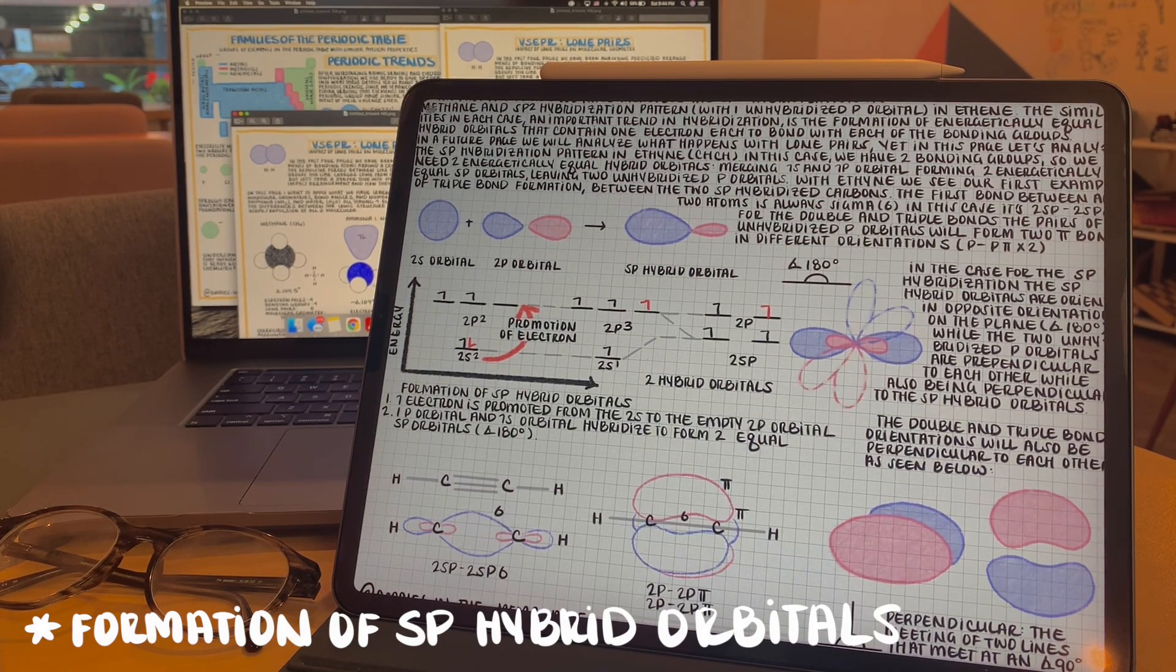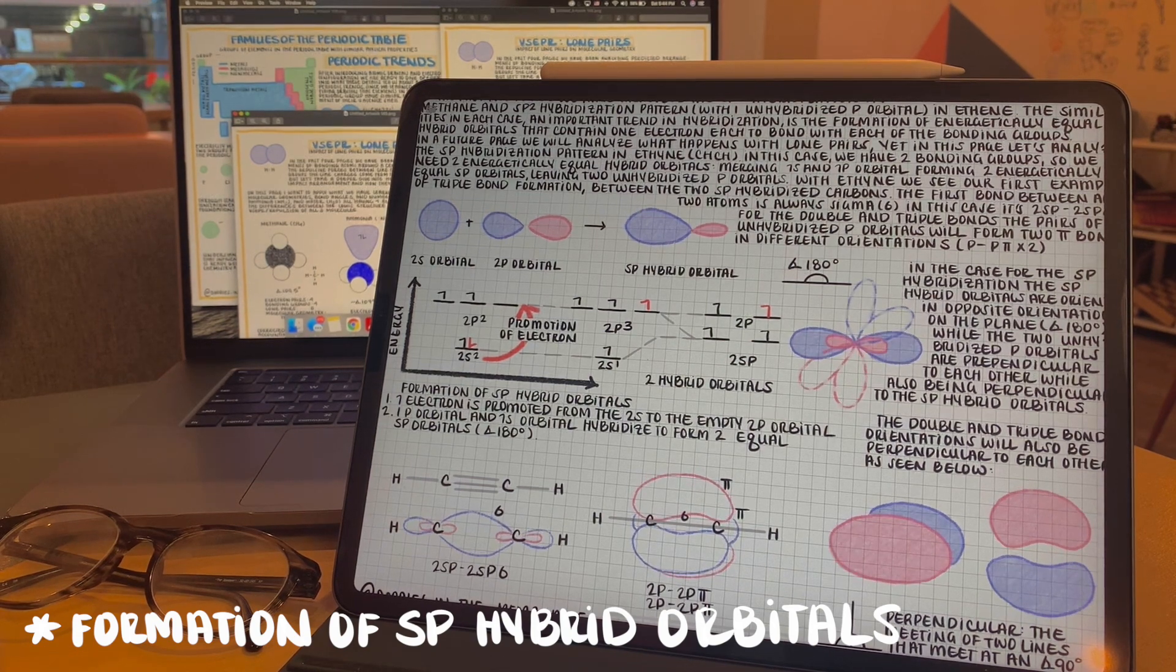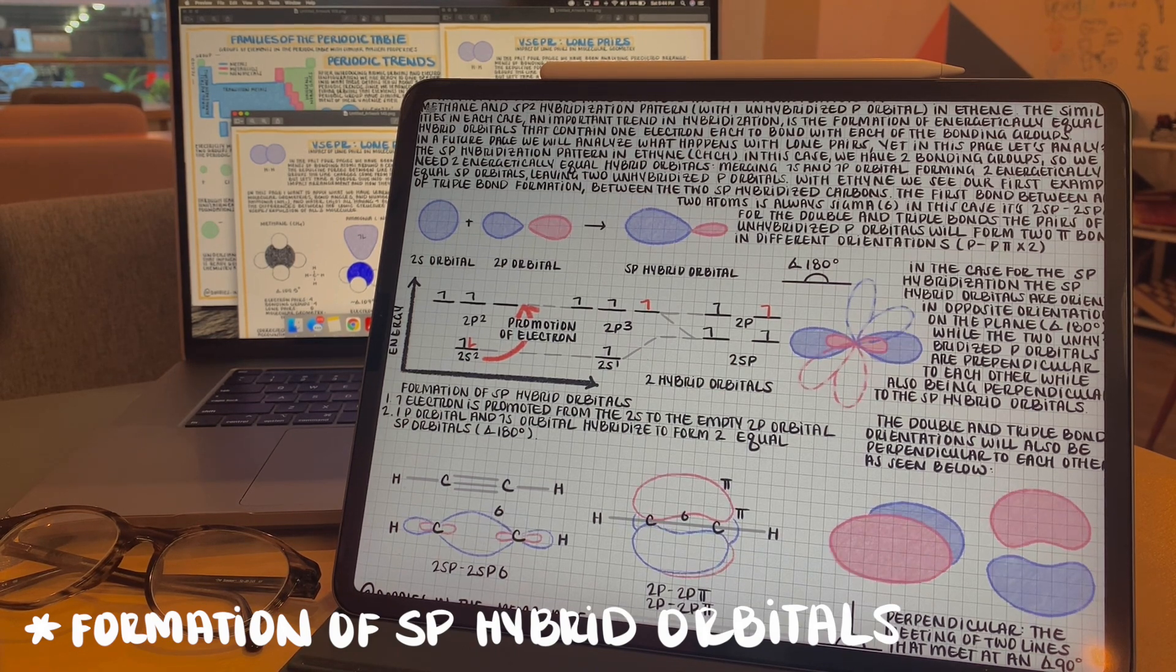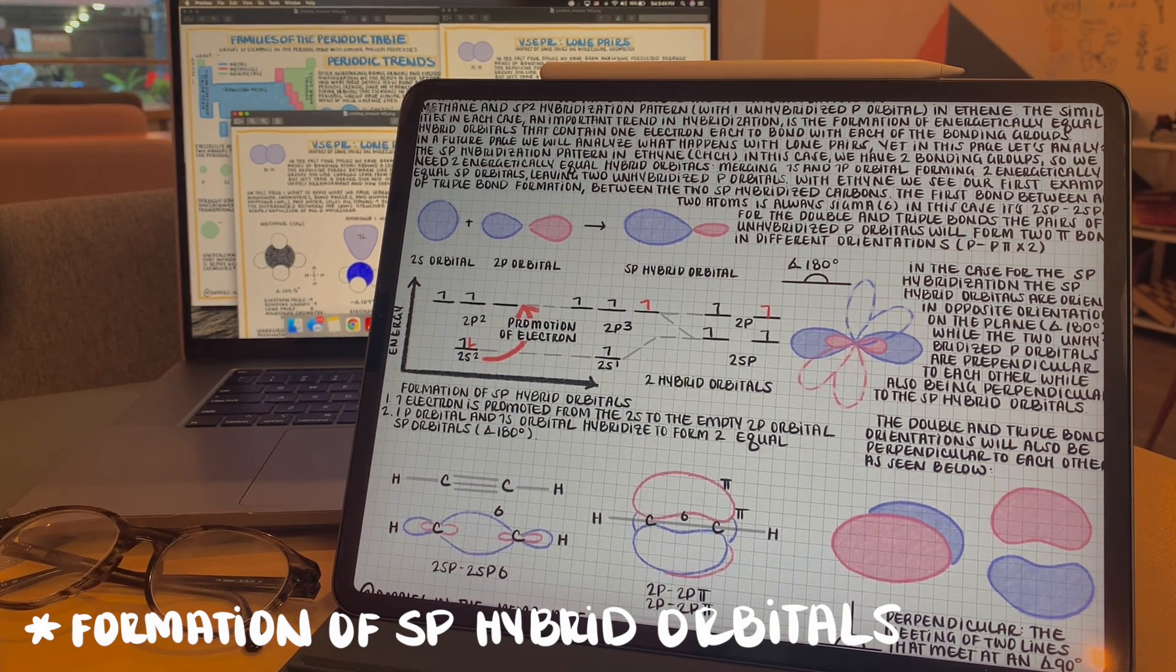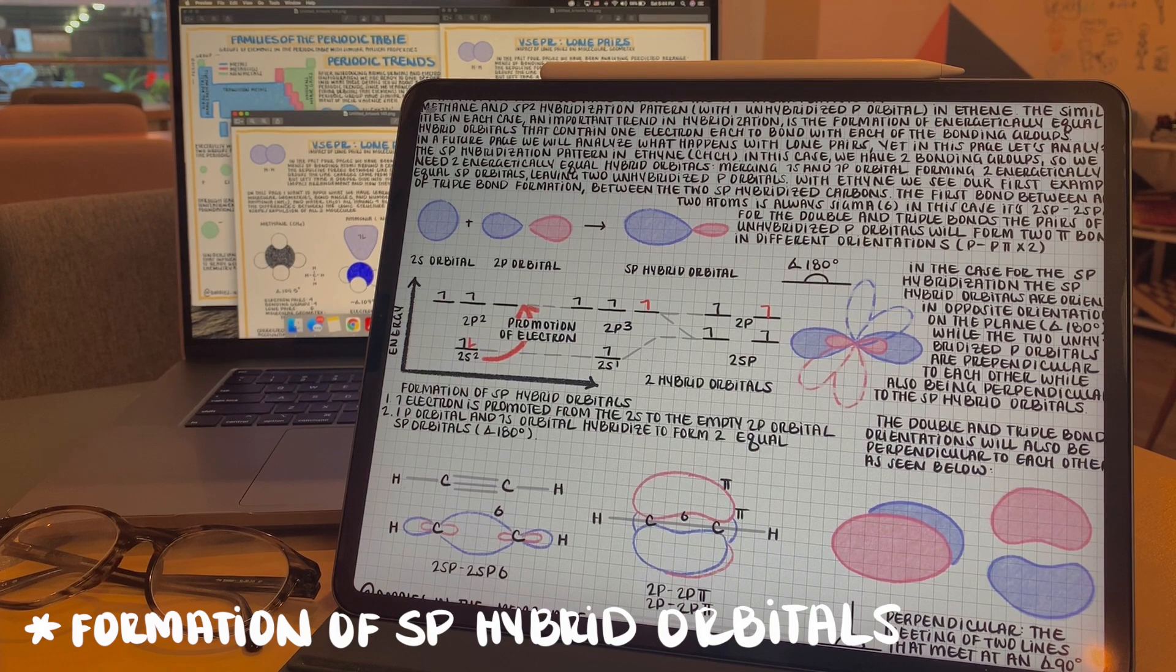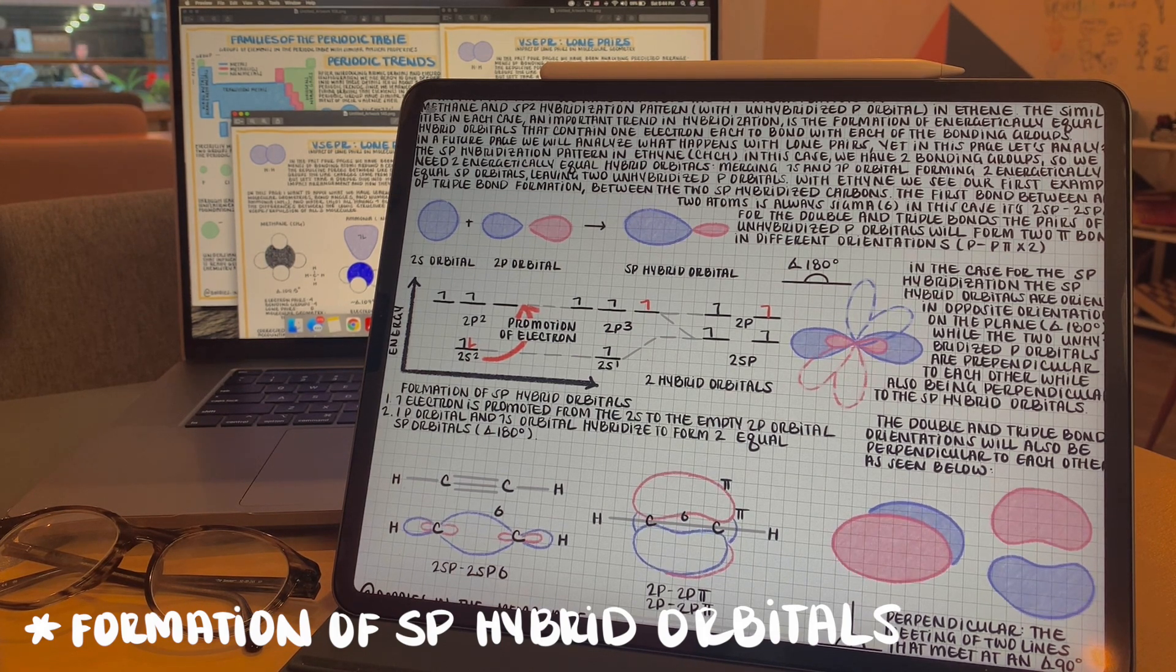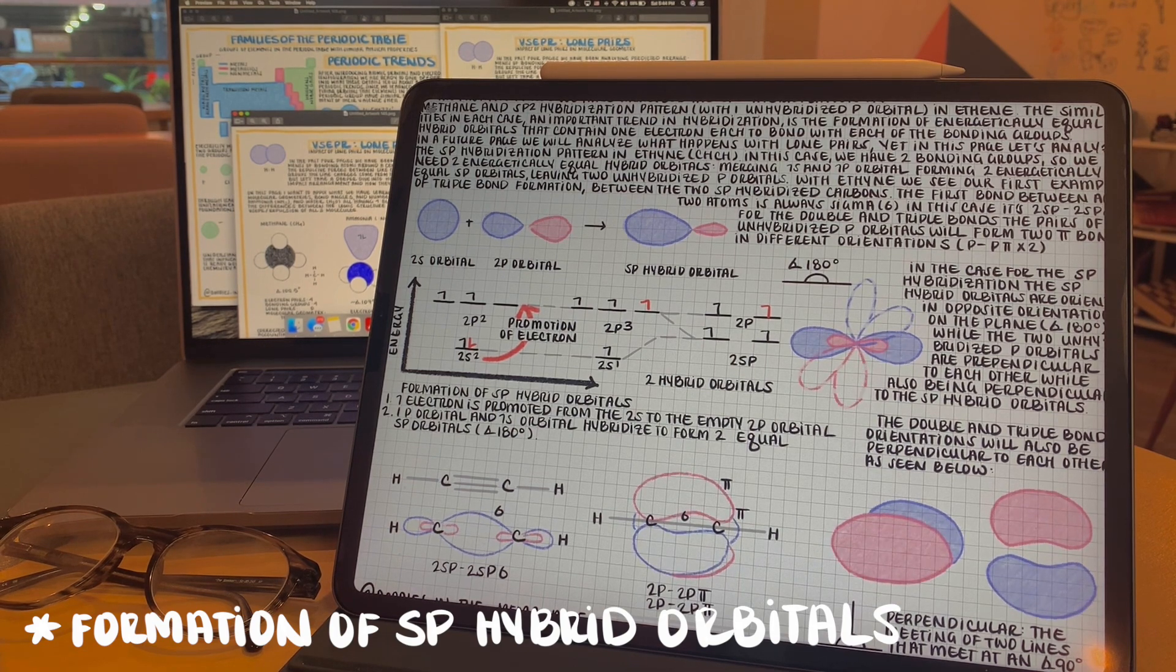Lastly, in the case of the linear geometry, we can analyze one of the carbons in ethyne. Just as in the past two examples, we are promoting one electron to the empty p orbital to create four unpaired atomic orbitals. But since we only need two bonding hybrid orbitals in this case for the two bonding atoms, one being hydrogen and the second being the adjacent carbon in ethyne, we will only create two hybrid orbitals, two sp orbitals, leaving two perpendicular unhybridized p orbitals. These unhybridized p orbitals will go on to form the double and triple bonds respectively.